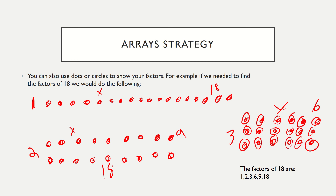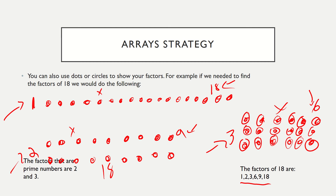Of my numbers, we have these factors shown with my arrays: one row with eighteen, two rows with nine in each, and three rows with six in each. Of those numbers, two and three are my prime numbers. On your assignments, you're going to have to list which ones are prime and which ones are composite at times.